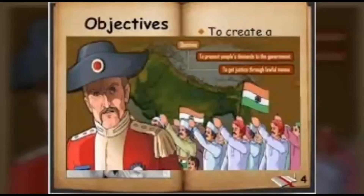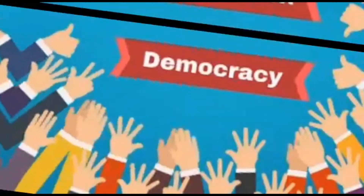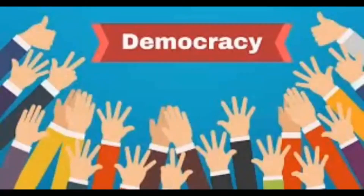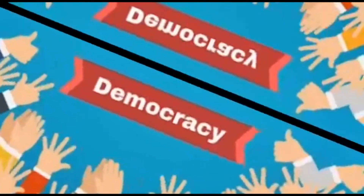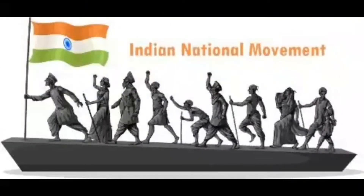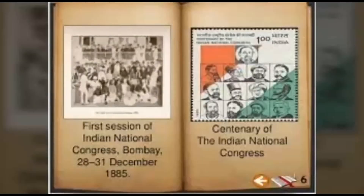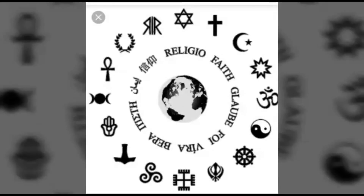Objectives of the Indian National Congress: To make the people from different parts of India forget the differences in religion, race, caste, language, and geographical territories, and bring them on a common platform; to understand each other's problems and views and increase the feeling of oneness among the people; and to take efforts for the development of the country — these were the objectives of the Indian National Congress.